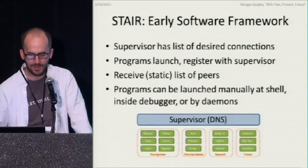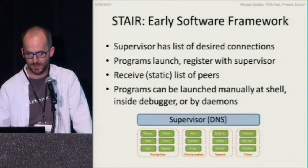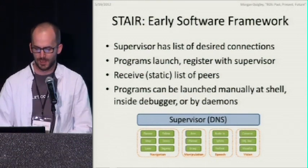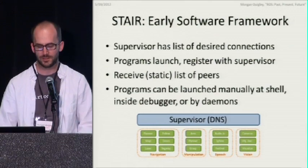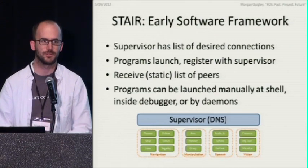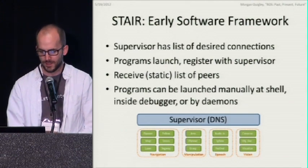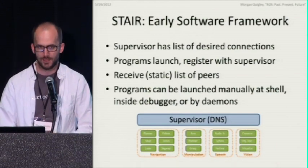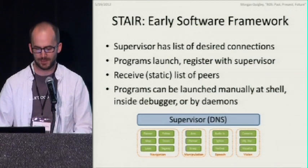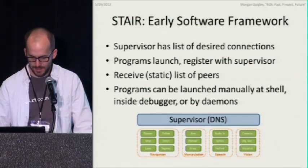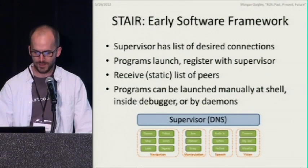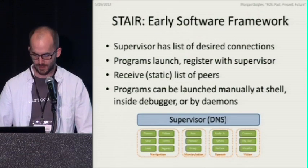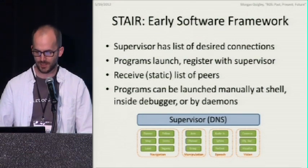We came up with this idea for early software frameworks where essentially there's a supervisory node at the top with a list of desired connections between components. Programs can launch, register with the supervisor node, and the supervisor gives them a list of peers to watch out for and ping periodically and connect to. This let you take these little sub-programs and launch them manually in Unix shells or inside debuggers, or have daemons start everyone off. This is kind of where things started — you can see the beginnings of ROS in here, though the list of peers was static rather than dynamic.